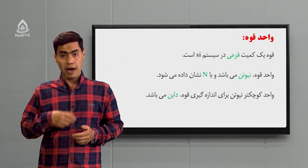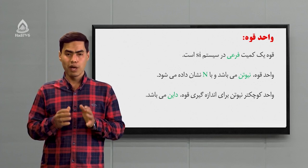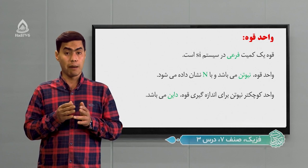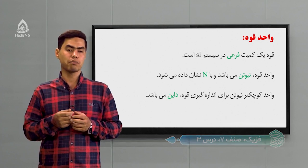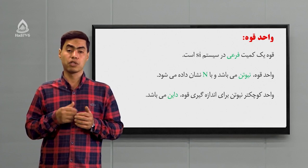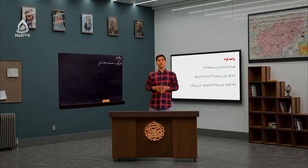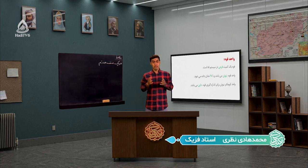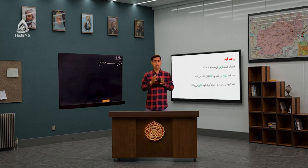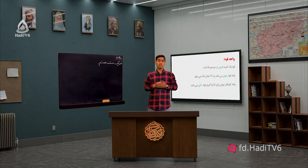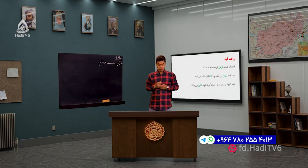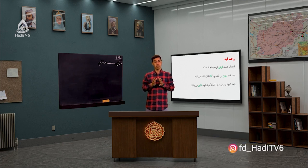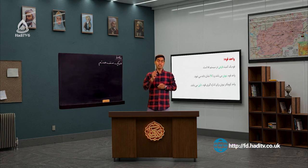در واقع وقتی برای یک کمیت دو تا واحد تعریف می‌کنیم، باید یاد داشته باشیم که هر دو را به هم تبدیل کنیم. در صنف‌های بعدی با داین آشنا می‌شیم. شاگرد عزیز، در این درس امروز ما خلاص شد. ما در این درس قوه را یاد گرفتیم، اثرهای قوه بر اجسام را با هم بررسی کردیم، و واحد قوه را یاد گرفتیم. پل ارتباطی ما و شما شماره ۲۰۹۶۴-۷۸۰-۲۵۰-۵۱۳ می‌باشه. شما می‌تونید سوالات، نظرات، پیشنهادات و انتقادات خودتان را برای ما روان کنید. تا جلسه بعد همه شما عزیزان را به خداوند منان می‌سپارم، خداحافظ.